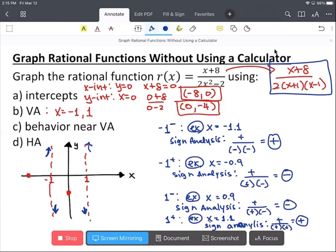Now let's look at our d. It says find the horizontal asymptote. HA represents horizontal asymptote. Let's look at the degree. The degree of the numerator is 1 and the degree of the denominator is 2. So the degree of the denominator is bigger. So we know that we have a horizontal asymptote at y equal 0.